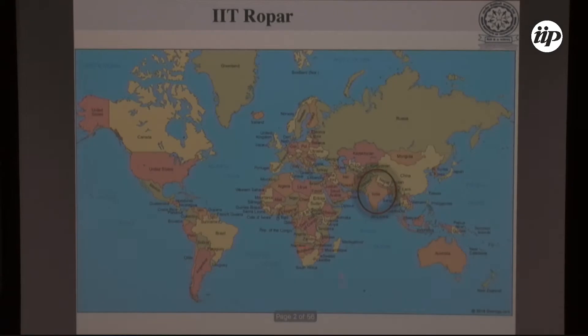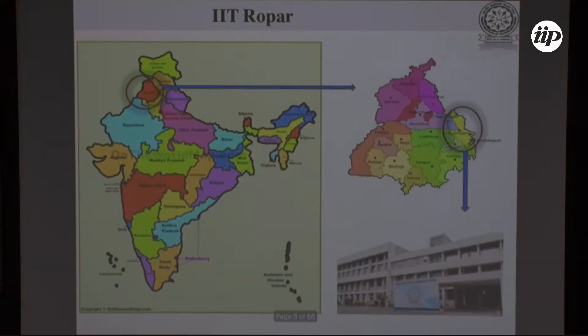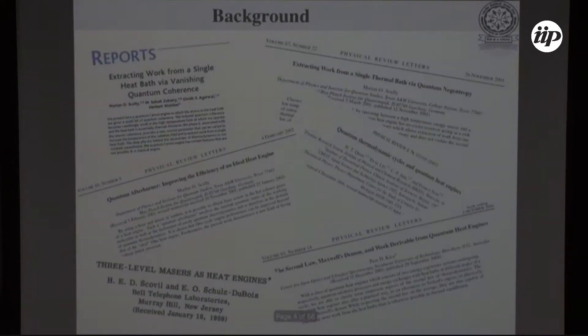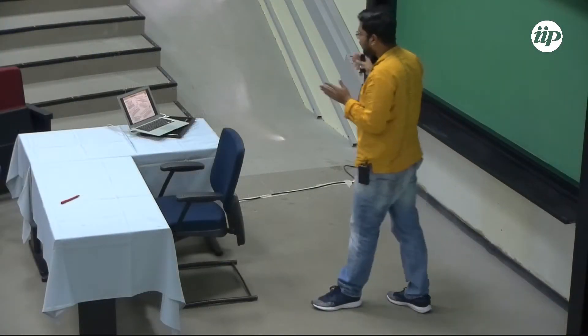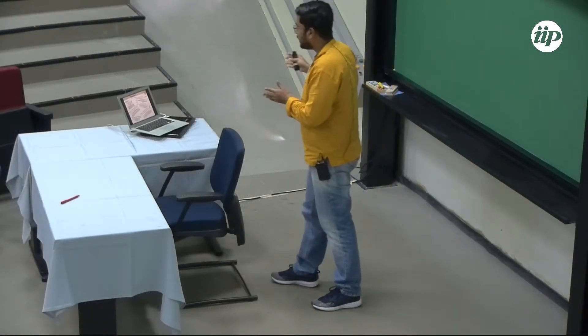IIT Ropar is in the northern part of India, in a state called Punjab, specifically in the region of Rupnagar. The motivation for studying quantum heat engines is to probe the subject of quantum thermodynamics, and one of the ways to do so is through the study of quantum heat engines.